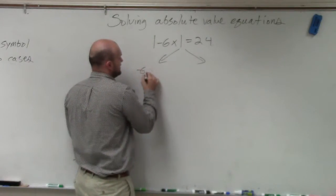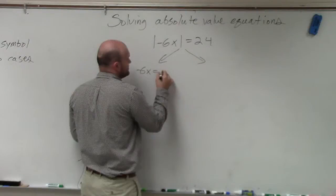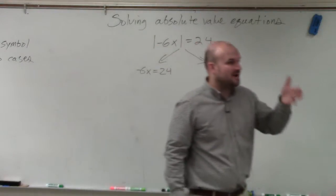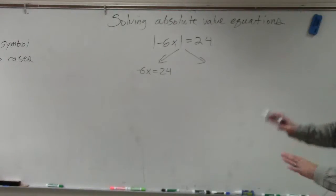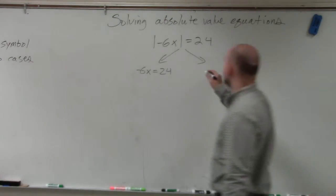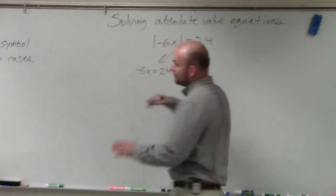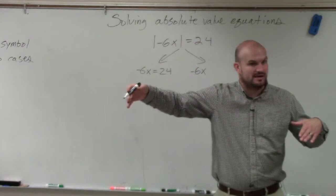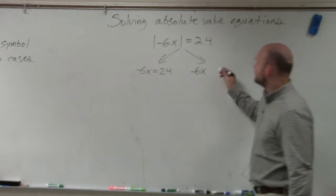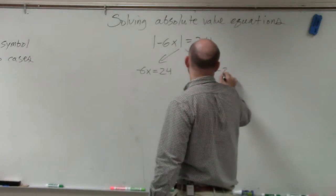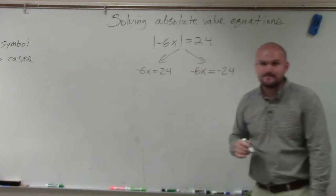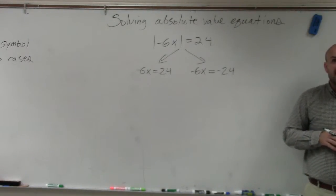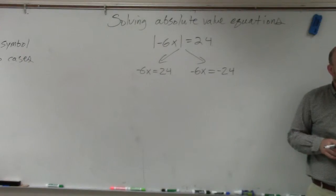We're going to keep the quantity inside the absolute value the same. One case is just how it is without the absolute value. The other case — because inside the absolute value, x could be positive or negative — we're going to negate the other side, meaning it's just multiplied by a negative. Then you just solve two equations and that's it.